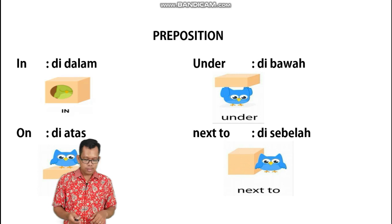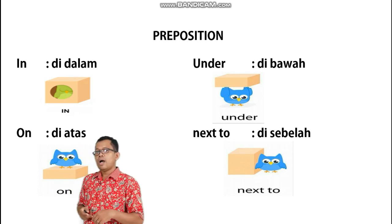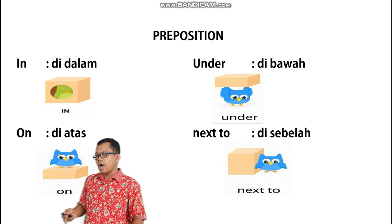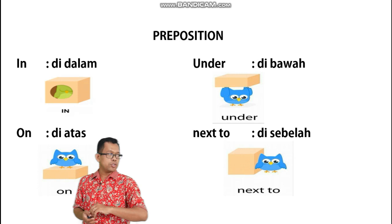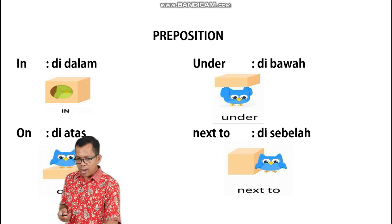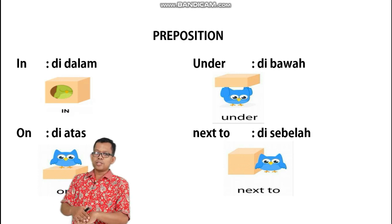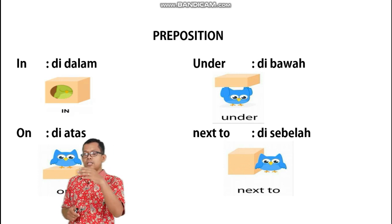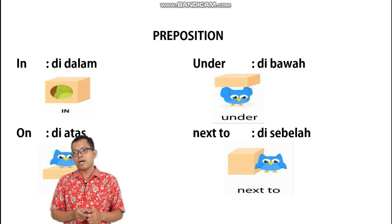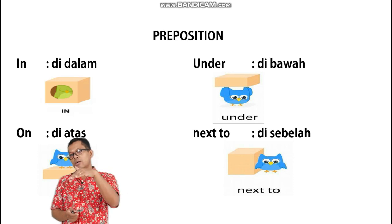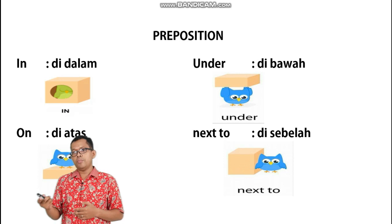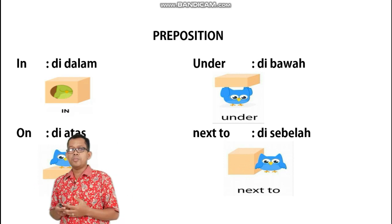Lalu yang berikut, 'under'. Banyak juga pengertian under — under, below, down, dan seterusnya. Tetapi 'under' khusus di sini adalah di bawah, artinya benda tersebut tidak terlalu jauh dari benda sebagai objek. Mari kita lihat gambar itu — di mana seekor burung itu berada di bawah kotak. Jadi, the blue bird is under the box.